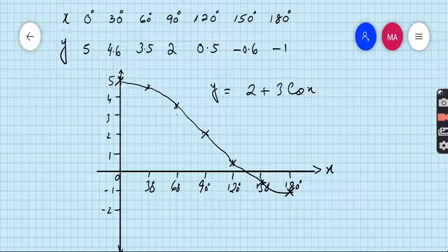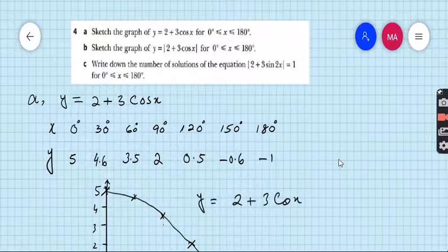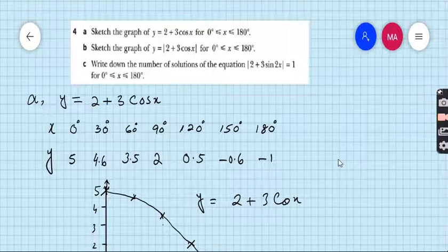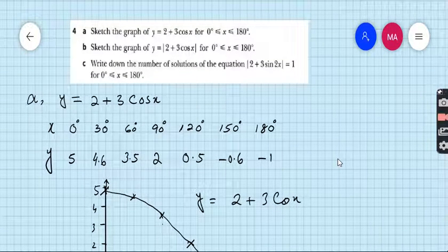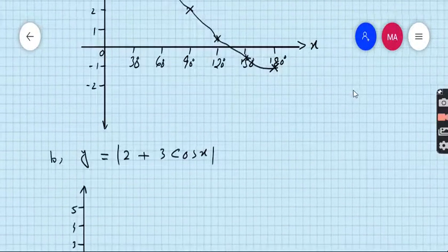Come to part B of this question. Part B is sketch the graph of y equals 2 plus 3 cos x modulus, or you can say absolute value. This is very easy.